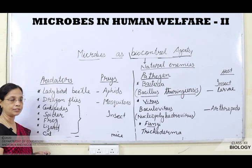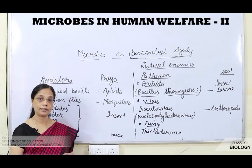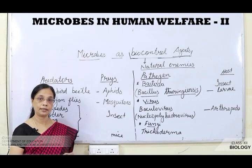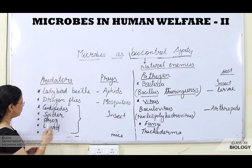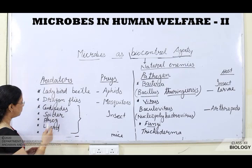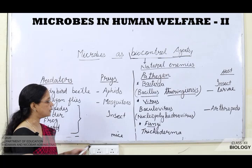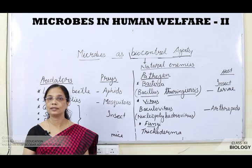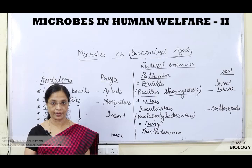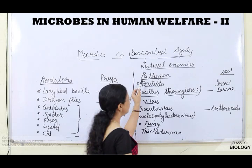Biocontrol agents work either as predators or as pathogens. As predators: ladybird beetles attack aphids; dragonflies kill mosquitoes and consume their larvae; centipedes, spiders, frogs, and lizards consume harmful insects; and cats play an important role in reducing mice that damage yield. This method of using predators controls insects and pests effectively.